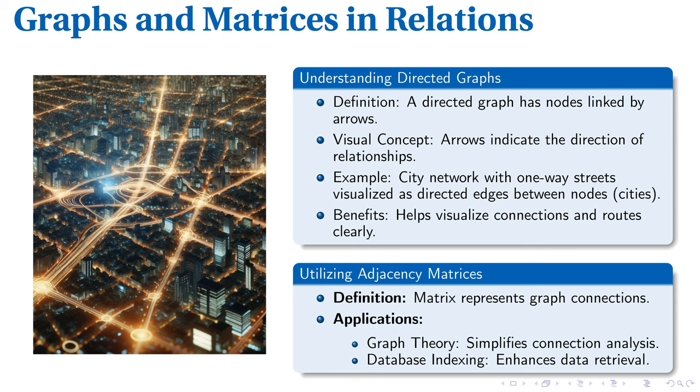Continuing to visualization of relations, we see their representation in directed graphs where nodes are connected by arrows, presenting the directional flow. Picture a city network where one-way streets form directed edges between cities, offering a clear understanding of navigational routes. This graphical representation lights up new perspectives on relationship mapping.